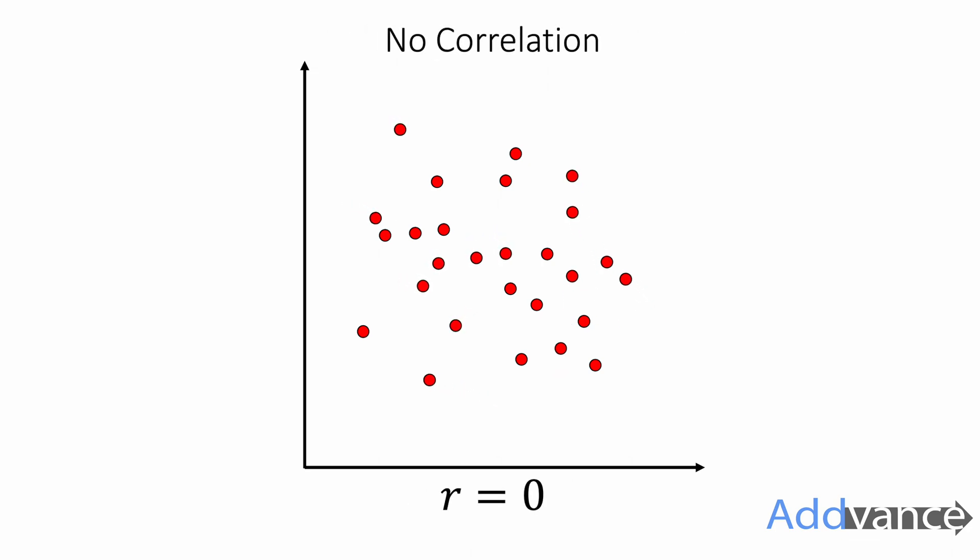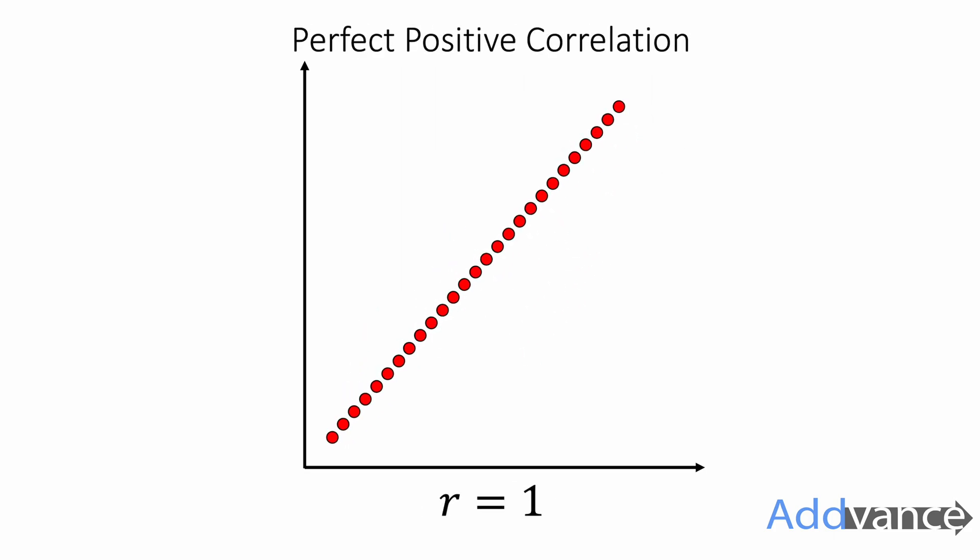Here it is just a cloud of random dots. There is no pattern in this data at all, and the r value is 0. Here is a mild positive correlation with an r value of about 0.5. And finally, we've got a perfect positive correlation where all the data is perfectly lined up and fits in a perfect straight line graph. The r value here is 1.